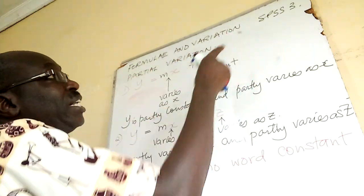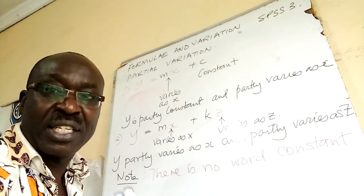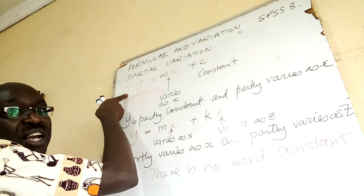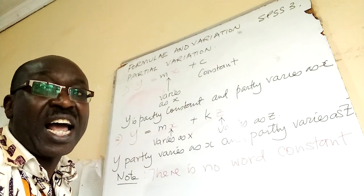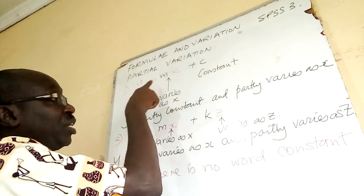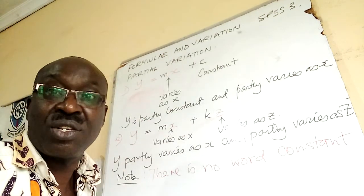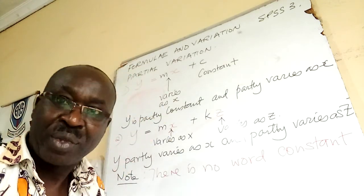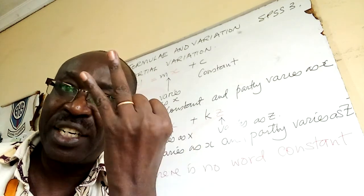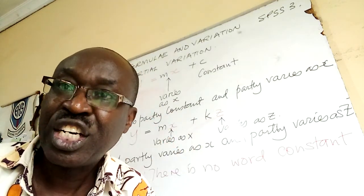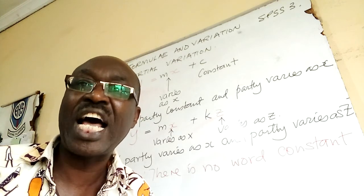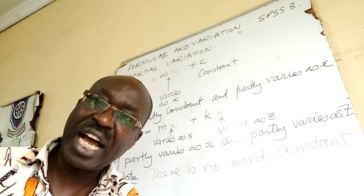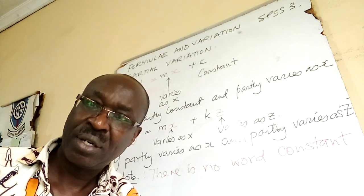I'm doing it as SPSS3. I'm giving key things which you can now apply in the questions. First sound of partial variation derived from a linear equation: Y is equal to mx plus c. All variations, the three - direct, inverse, and joint - they don't have addition sign.